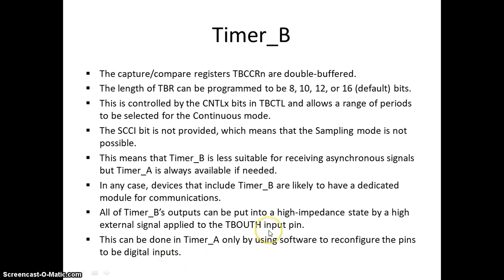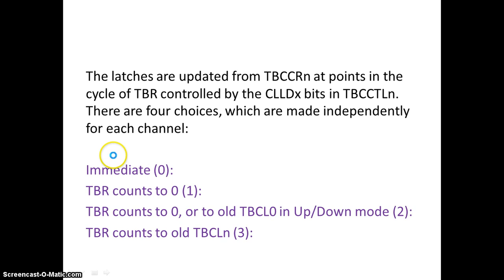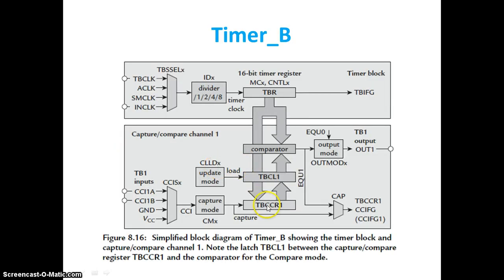The latches are updated from TBCCRN at points in the timer cycle controlled by the CCLDX bits and TBCL. The four choices can be made independently for each channel. Based on the CCLDX register, we determine when the value is going to be loaded.